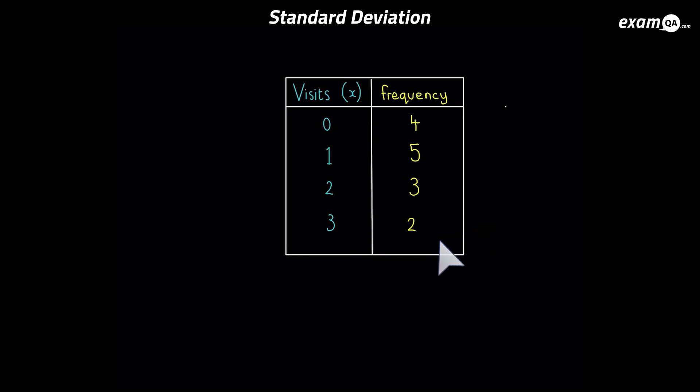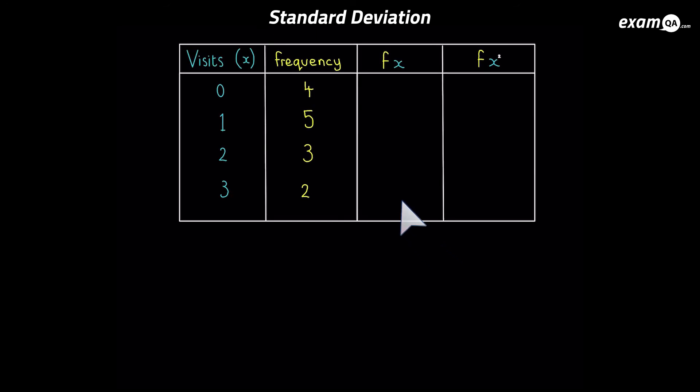Now we're going to make some more columns first. We've got a column for fx. And we need a column for fx squared. Now fx just means f times the x. The frequency times the x. For example for the first one it will be 4 times 0. So you can just fill in that column. And it's not too difficult. The next column is f times the square of the x value. So it will be 4 times 0 squared for the first one. And these are the values you should have got for that. Now for that formula we needed the sum of these fx's. So we'll just sum that column up. And we needed the sum of the frequencies too. So we need to sum that column too. And of course we need the sum of the fx squared column.